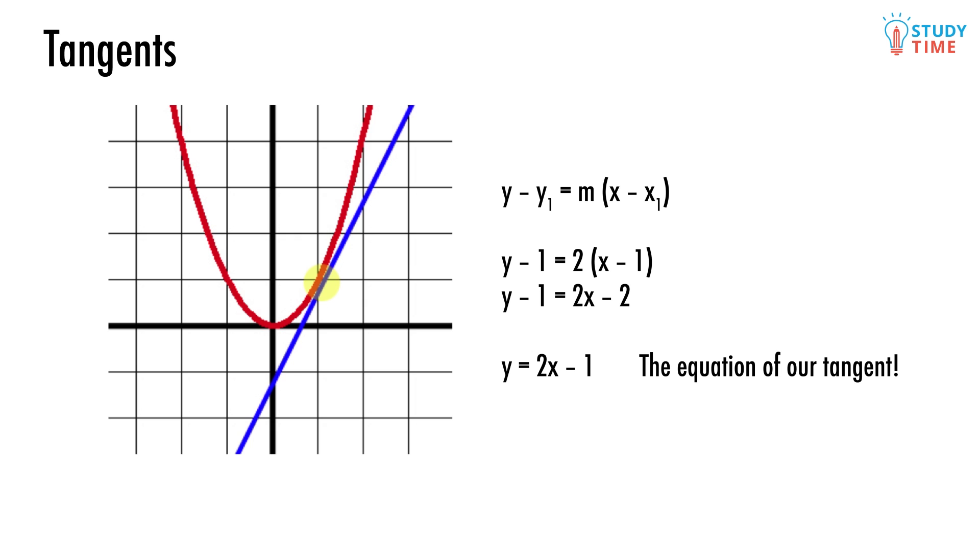Then we expand it out. y minus 1 equals 2x minus 2 equals 2x minus 1. And just like that, we've managed to find the equation of that tangent, even though we started out knowing next to nothing about it.